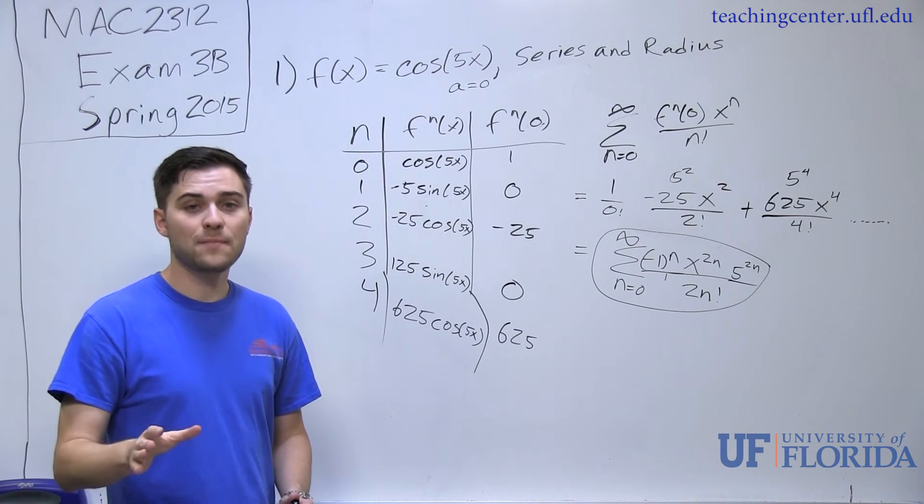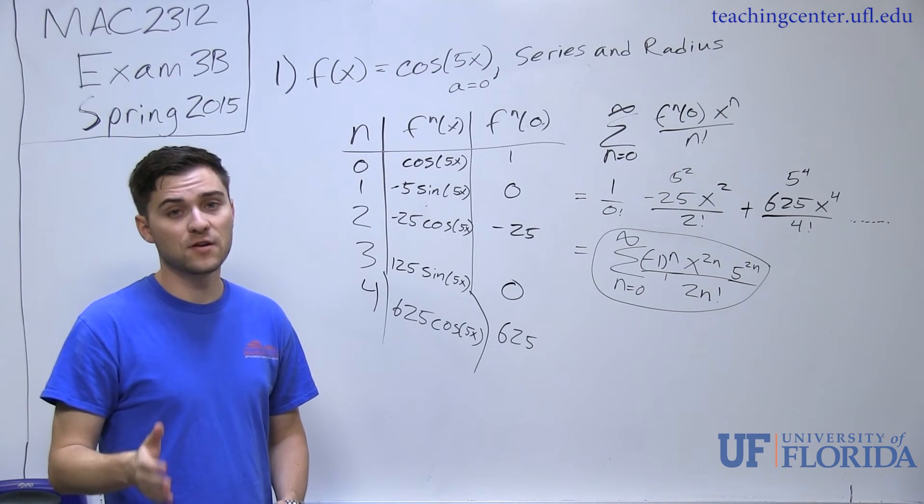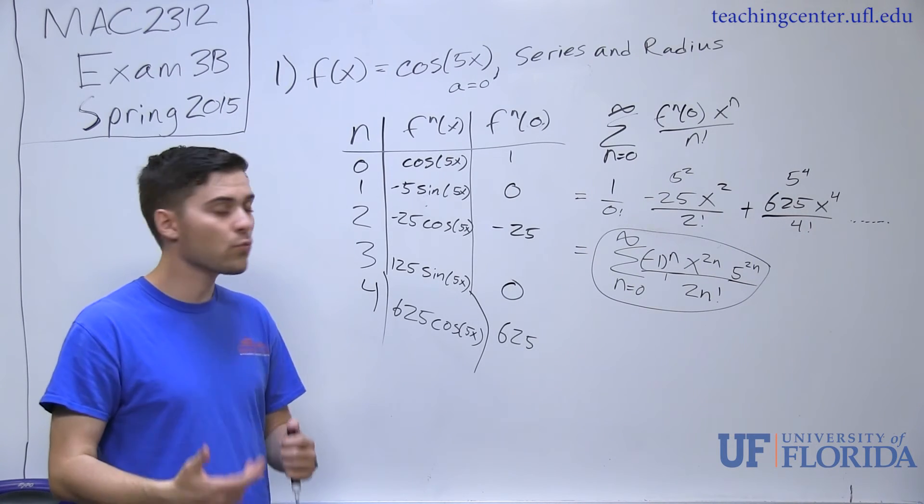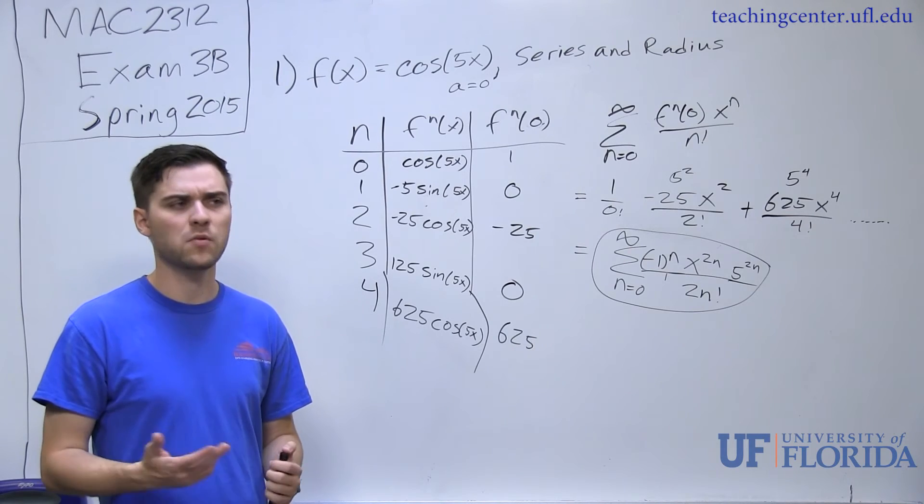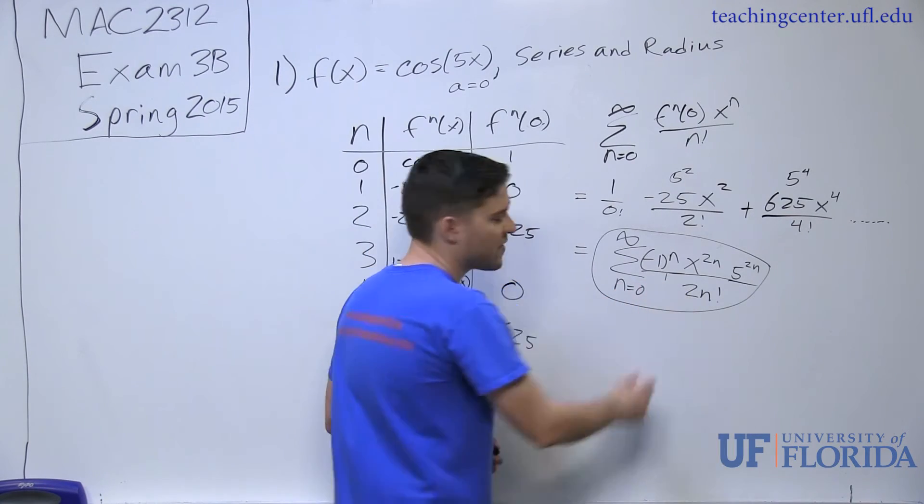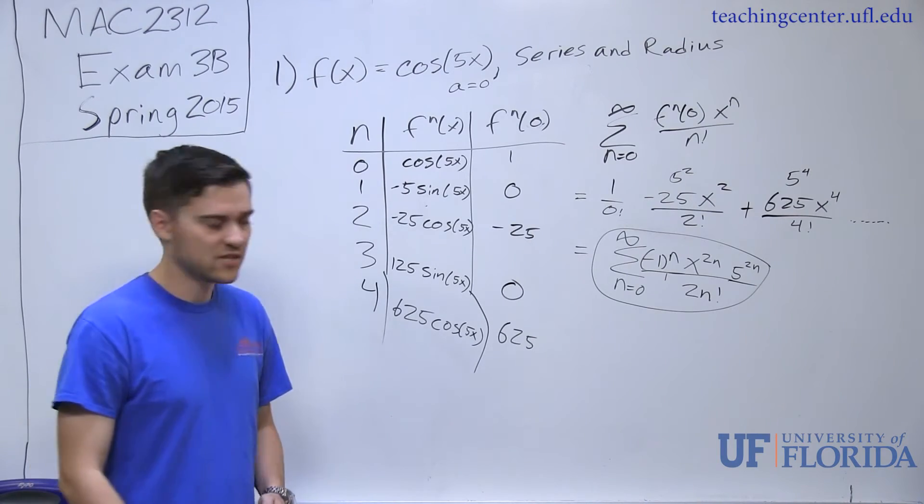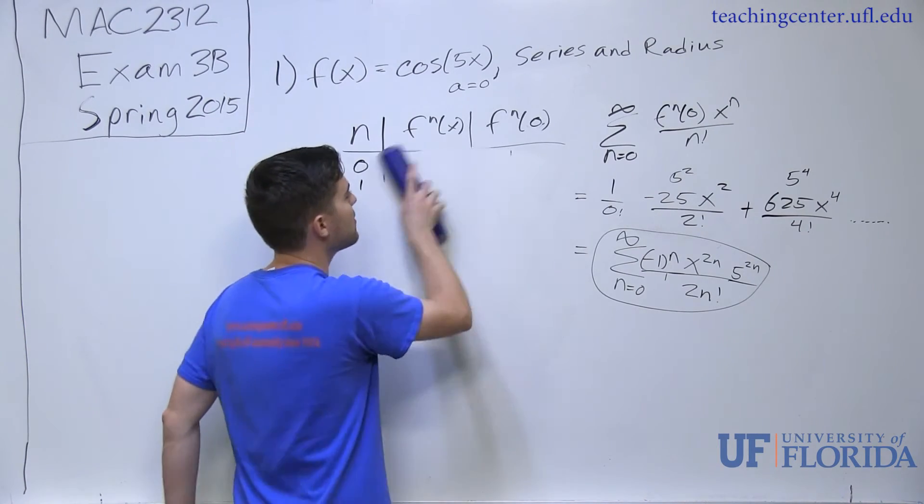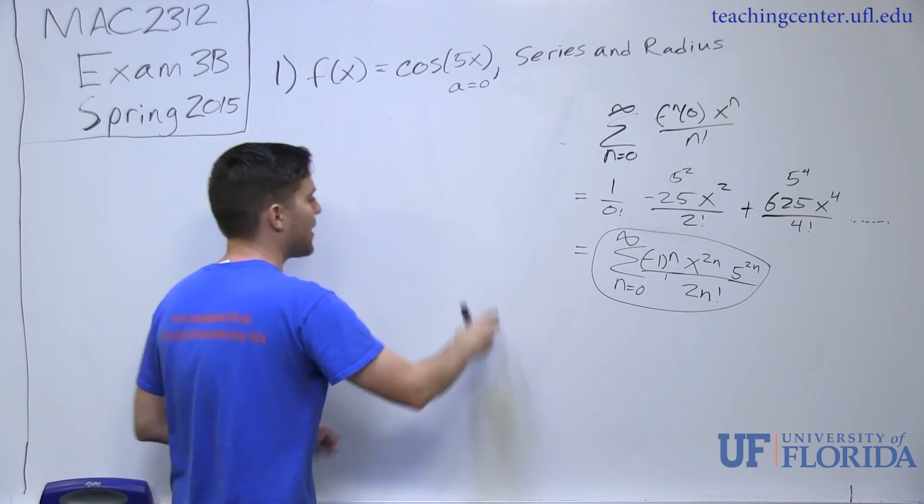There is one last step that we have to do. We have to find the radius of convergence. To find the radius of convergence, we have to apply either ratio or root test. Or, if it is a geometric series, we could also just apply geometric series test. But in this case, because we have a factorial, probably best to stick to ratio test. Let's go ahead and let's write out ratio test and let's see what we can get.